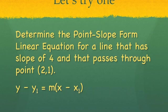So why don't you try to determine the point-slope form linear equation for a line that has a slope of 4 and that passes through the point 2, 1. Now remember to use the equation y minus y1 equals m times x minus x1.